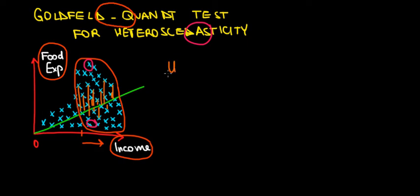So u, which stands for the unexplained term or the residual term, to the power of 2 is showing us the variation. So we want to prove that this variation is not constant.